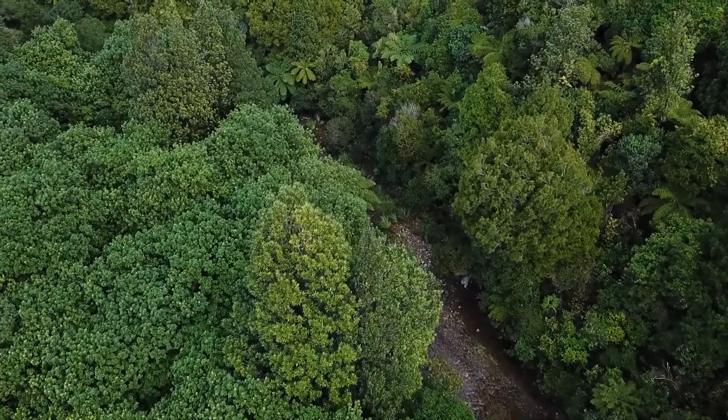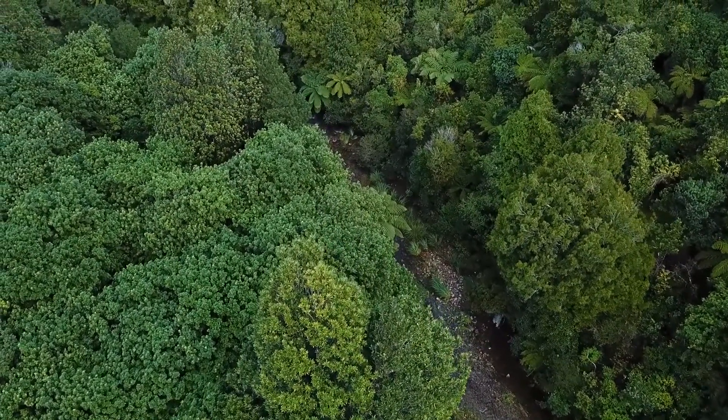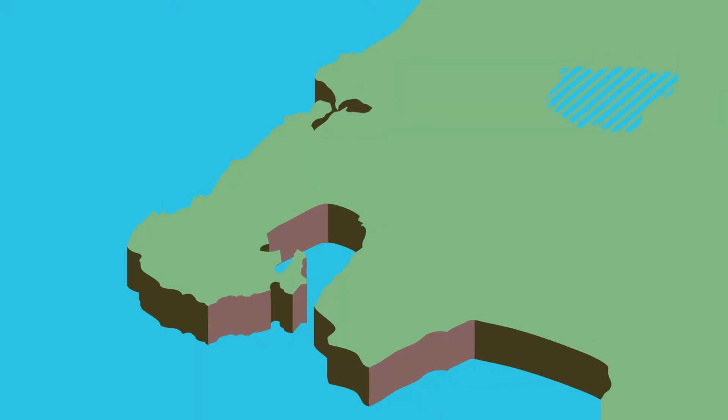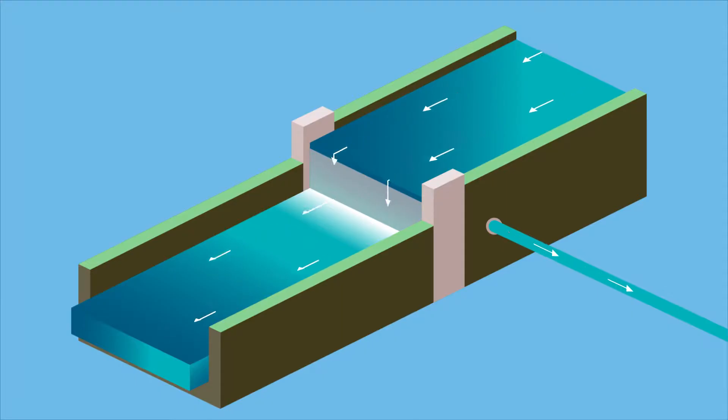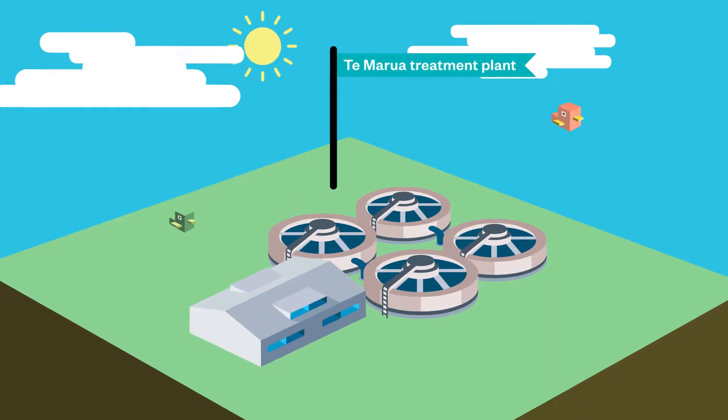The second source is the bush-clad mountains and valleys at the southern edge of the Tararua Ranges, the Hutt River, Te Awokairangi Catchment. River water is taken through a weir, or low dam, at Kaitoki and piped to the Te Marua Drinking Water Treatment Plant.